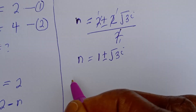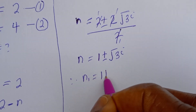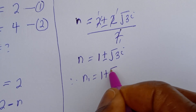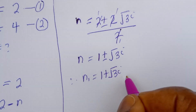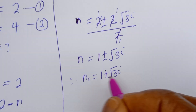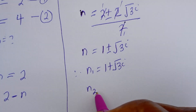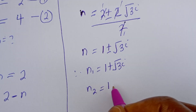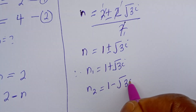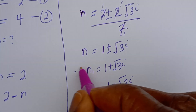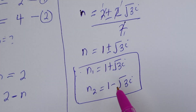Therefore, n1 is equal to 1 plus root 3 i, and n2 is equal to 1 minus root 3 i. We've got the values of n.